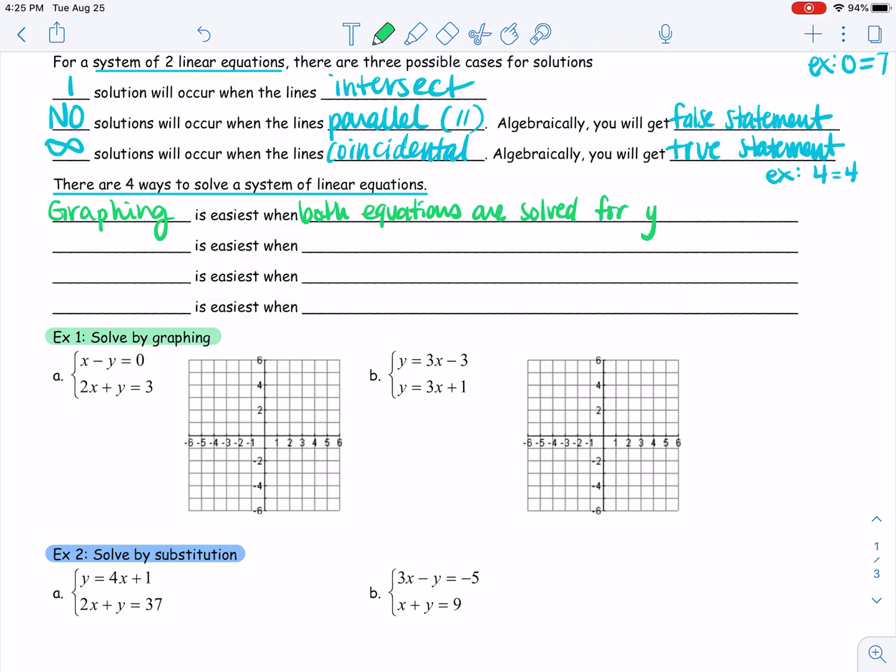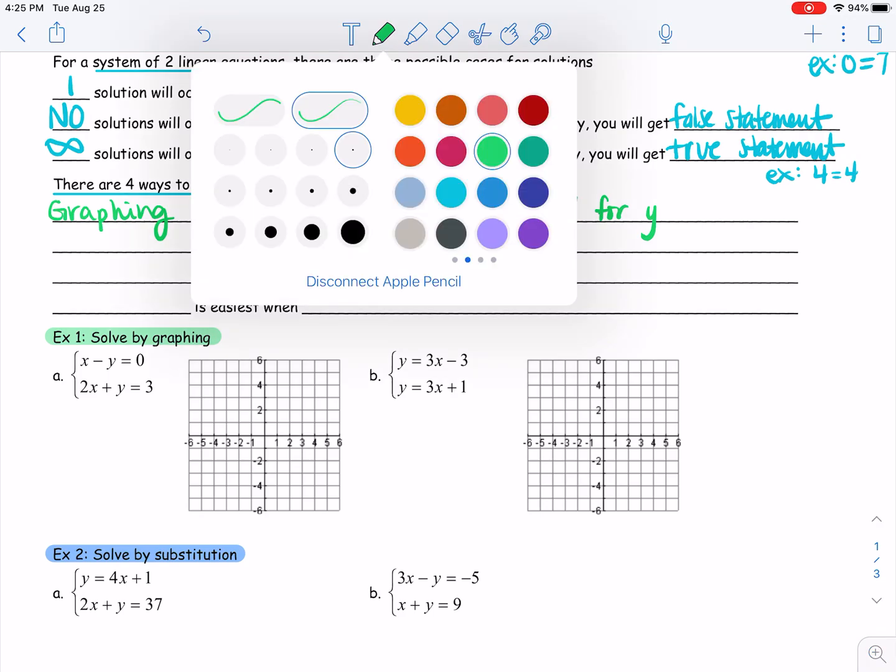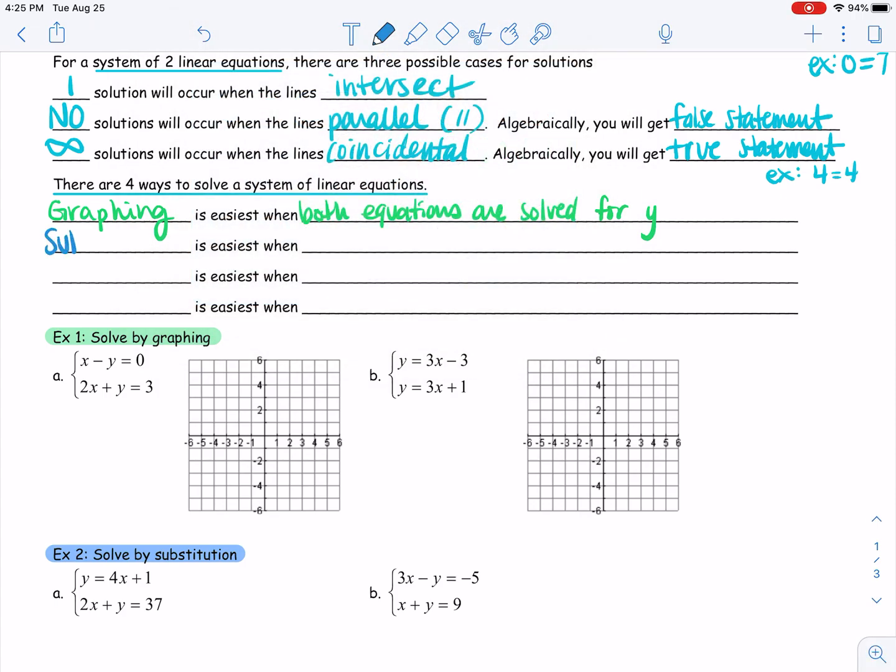What's another way of solving a system of equations? We also have substitution. Substitution is easiest when one of your variables is already isolated or easy to get isolated.